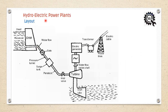Now let us see another example — this is a hydroelectric power plant layout. Here we have a reservoir, a head, a dam, a turbine, and an electric generator. The water in the reservoir has potential energy.